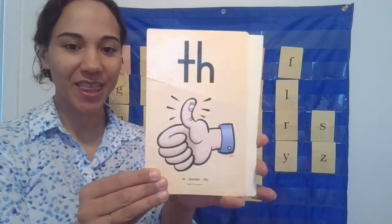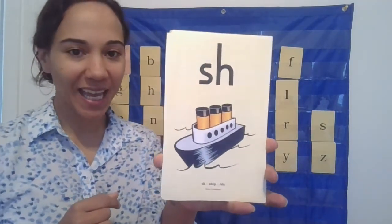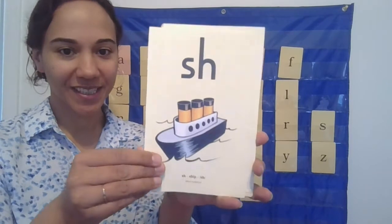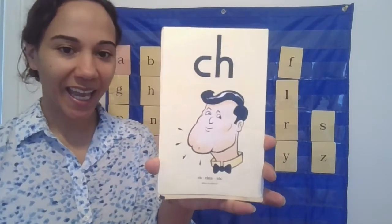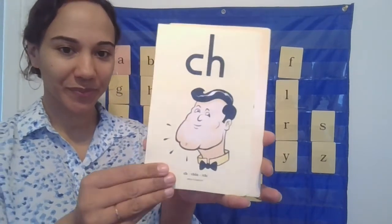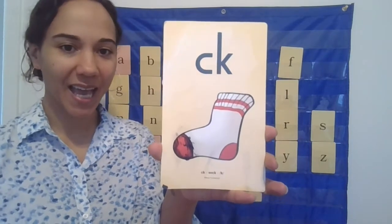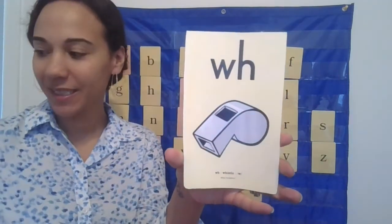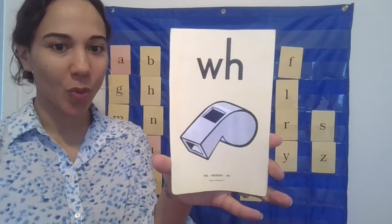T-H: thumb. S-H: ship. C-H: chin. C-K: suck. W-H: whistle.